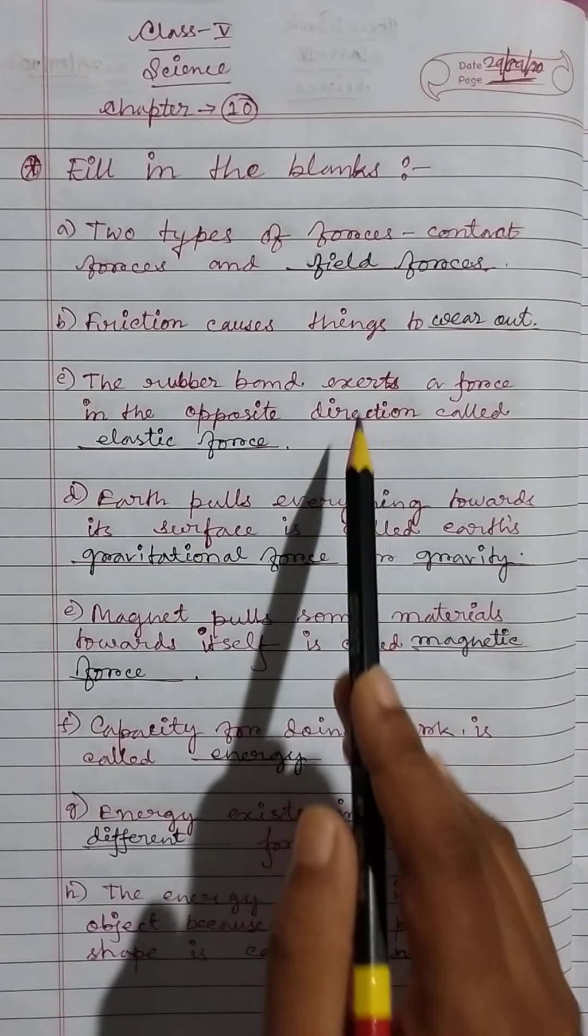Solar panels convert heat and light from the sun into electricity. A pulley uses a rope moving around the edge of a wheel to lift heavy objects.